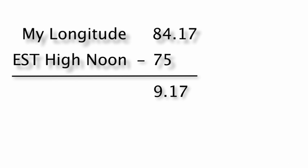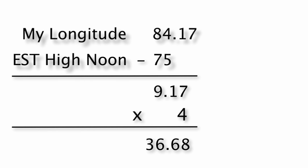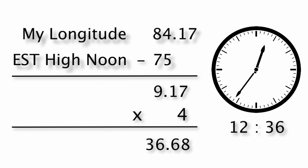Then multiply that number by four. Remember, it takes the sun four minutes to move one degree. If your number is negative, this is the number of minutes before clock noon that is high noon for your area. If your number is positive, this is the number of minutes after noon that is high noon for your area.